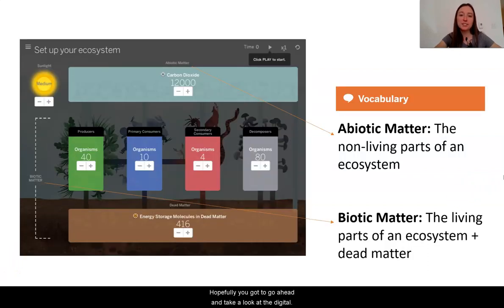Hopefully you got to go ahead and take a look at the digital model. If you didn't, that's all right. You can follow along as I go through it with you. You might have noticed that there are two different parts to the digital model: an area called abiotic matter and biotic matter.